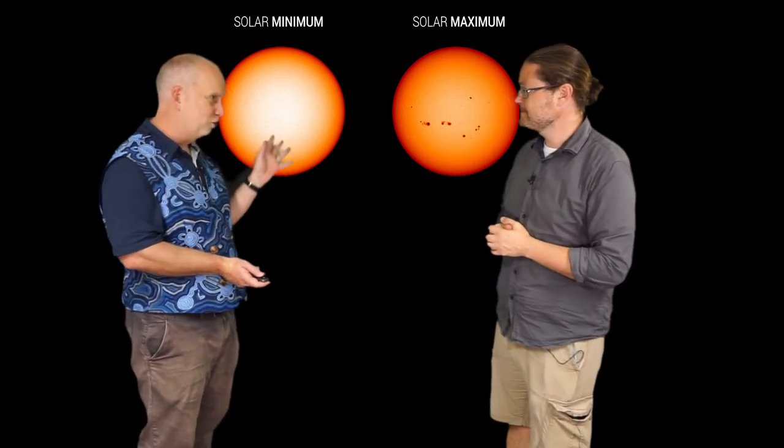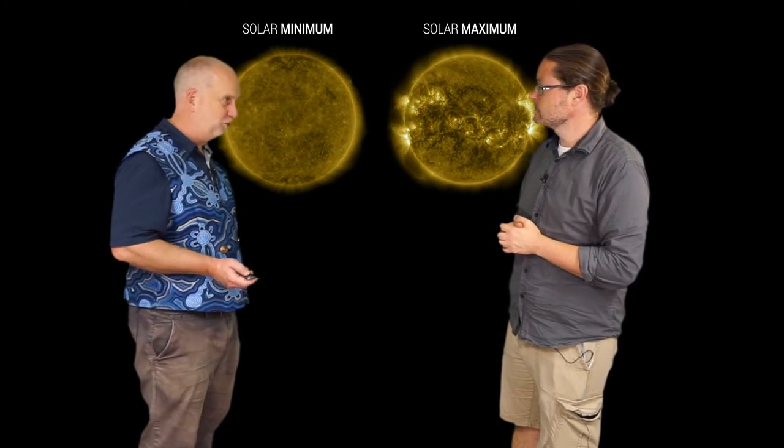That's right, so if we now flip to the x-ray or ultraviolet image you can again see solar minimum there's not much going on, solar maximum there's a lot of flares and so on going on.